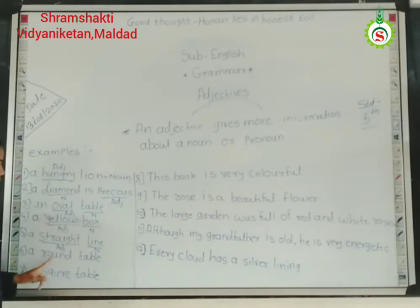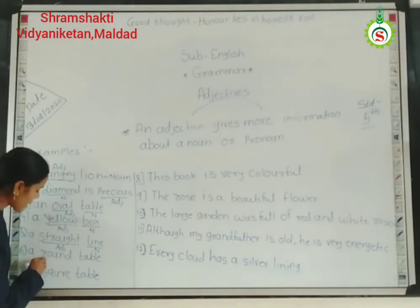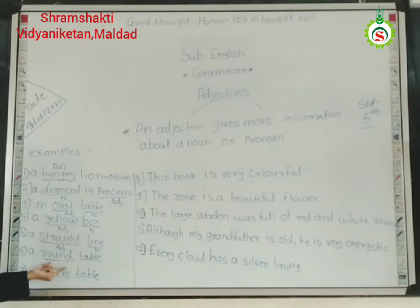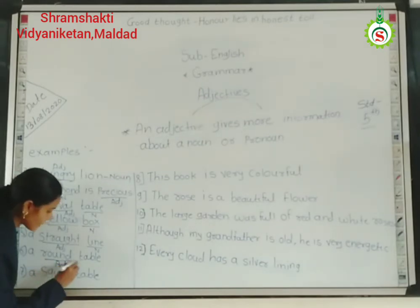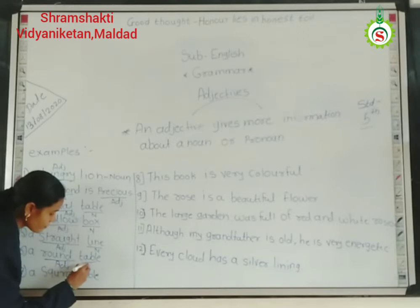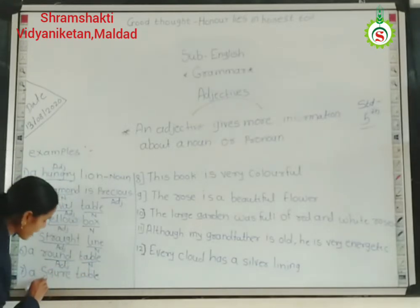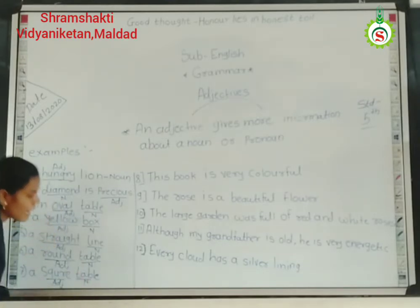Then, 'a round table.' How is the table? The table is round. So round is the adjective and table is the noun. Then, 'a square table' — square is the adjective and table is the noun.